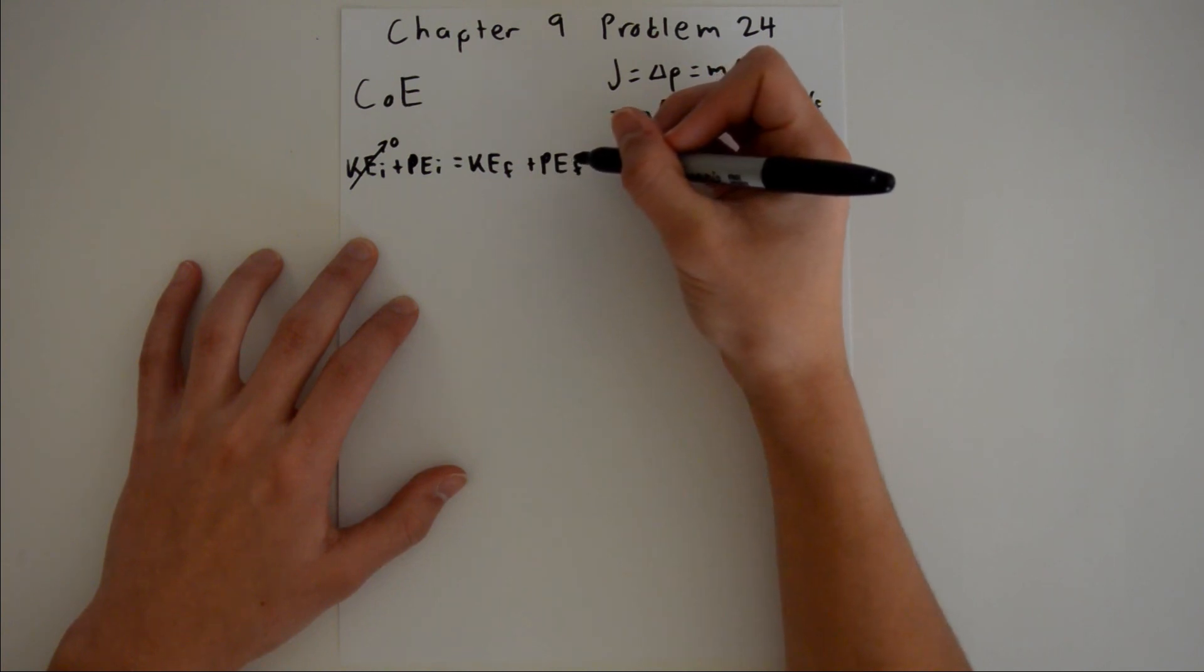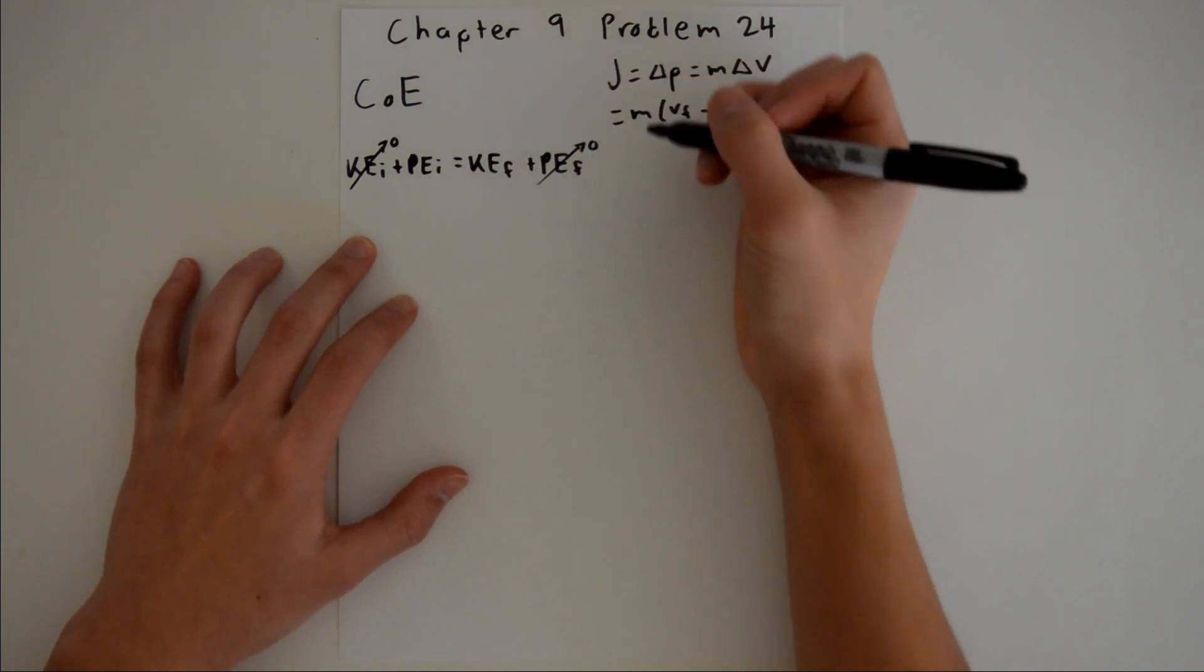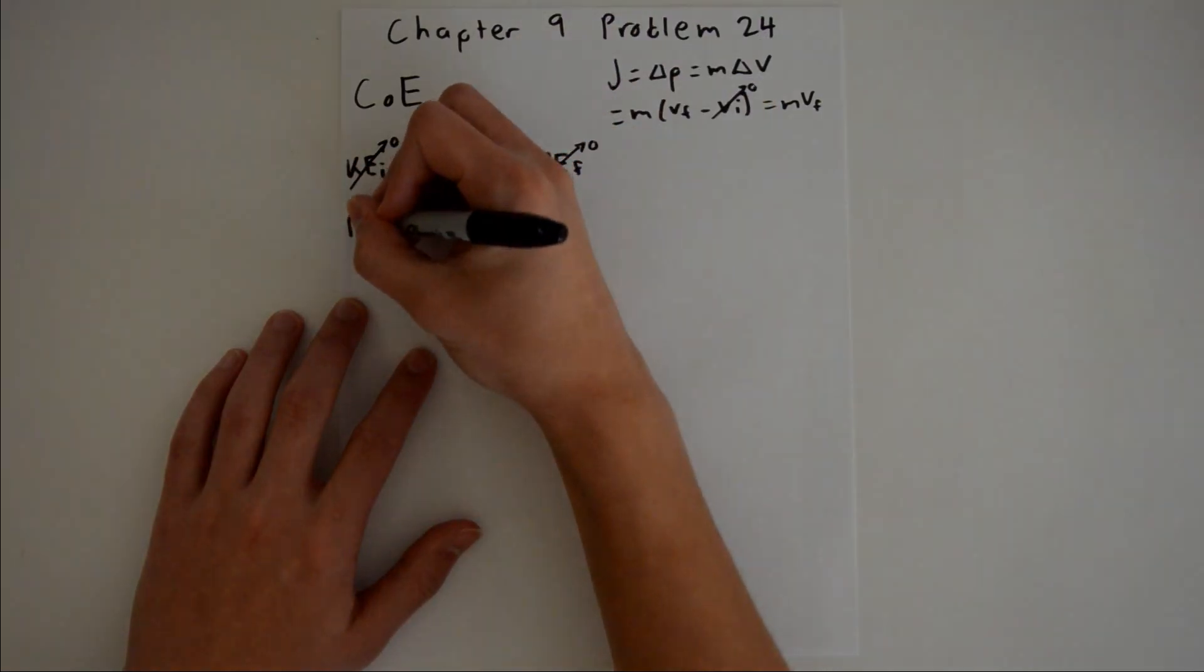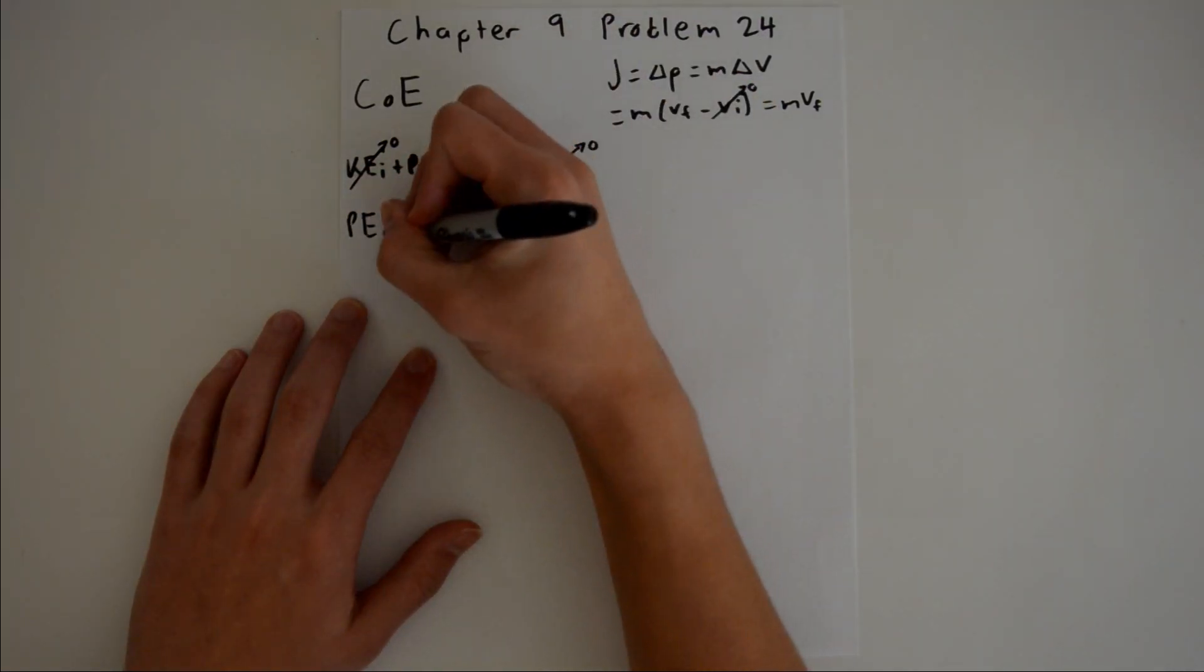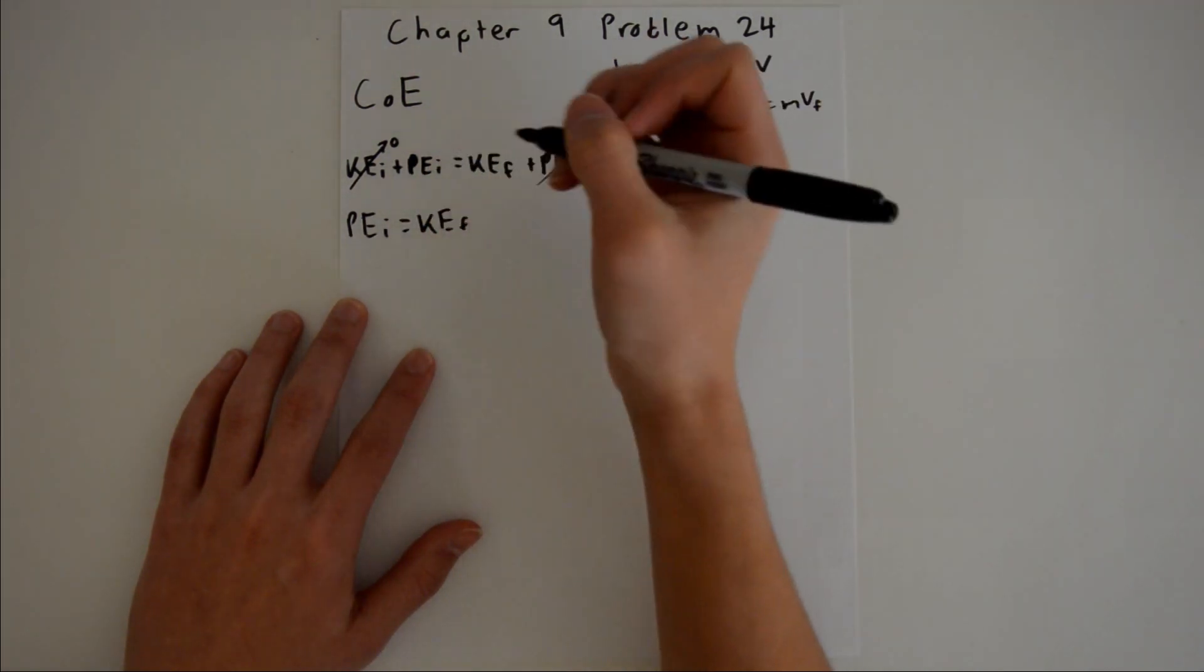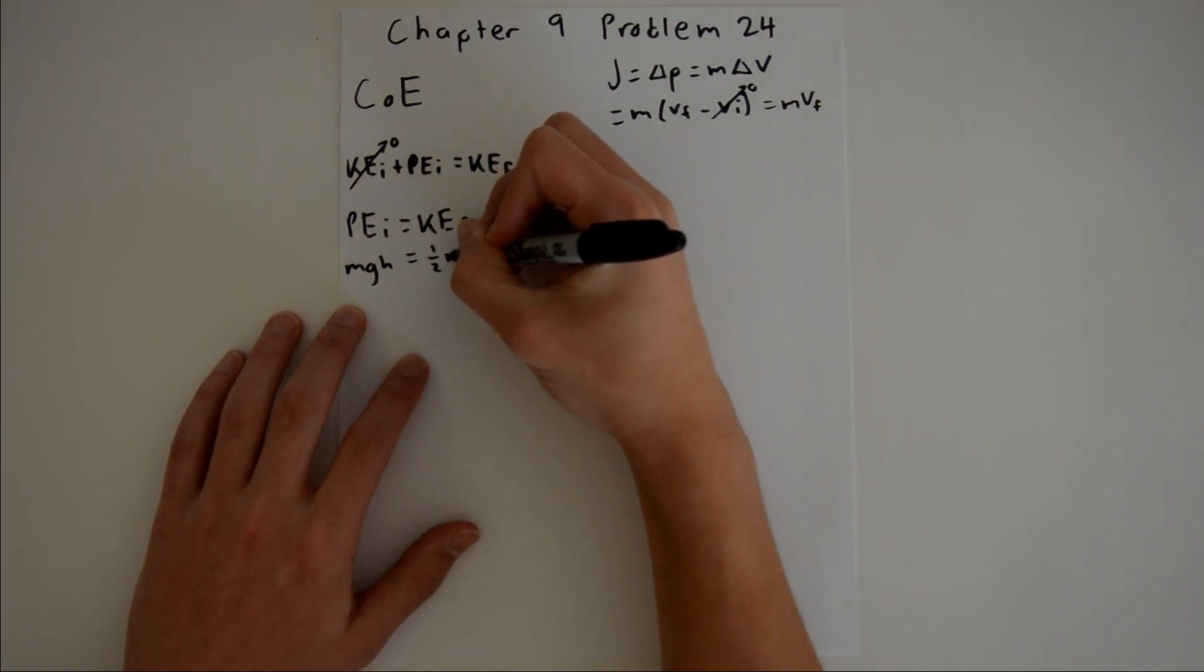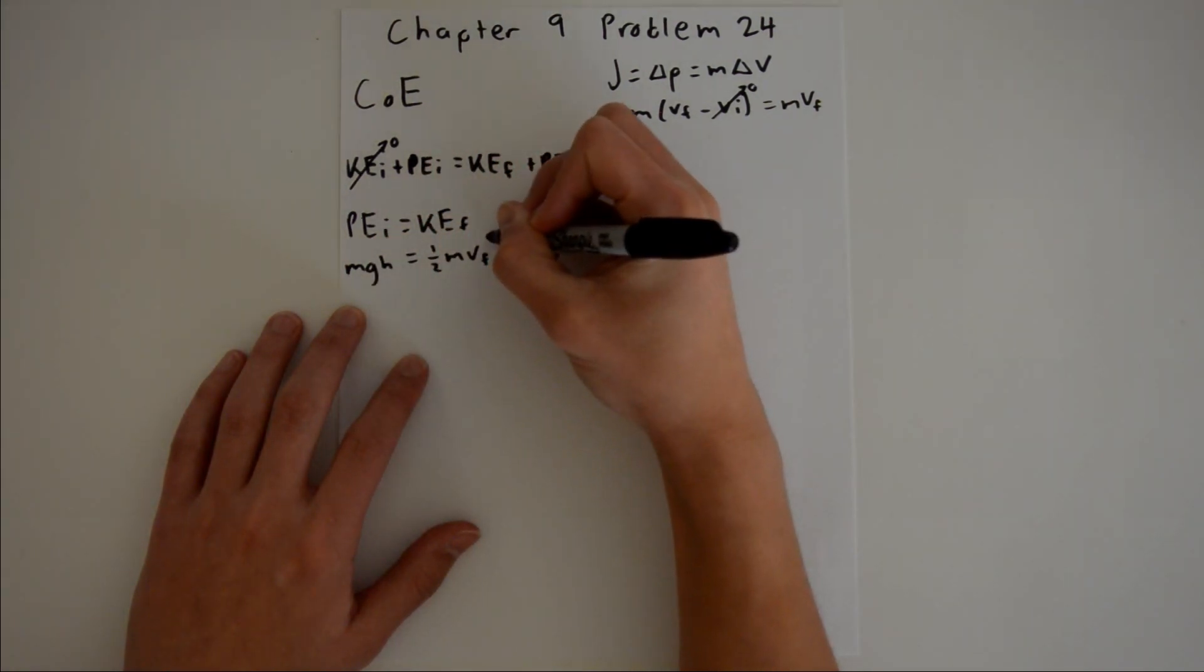Theoretically when they hit the ground they should not have any more potential energy, so our final potential is also zero. We can rewrite this to say potential energy initial is equal to kinetic energy final, and we can expand that and say mgh is equal to one-half mv final squared.